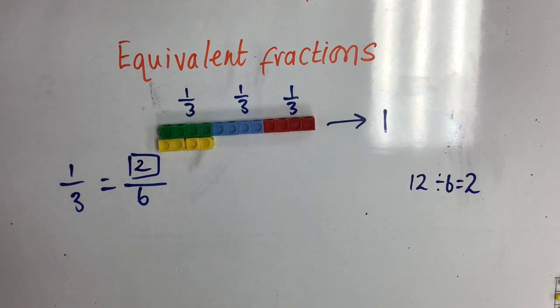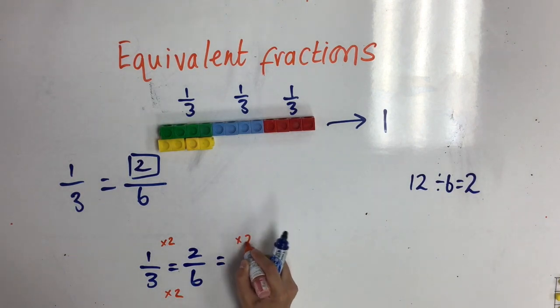Using our times tables idea, I can now work out more equivalent fractions. So, one third is the same as two sixths. I know that one times two is two, and that three times two is six. So, all I need to do is keep times in by two to help me work out what the next equivalent fraction is.